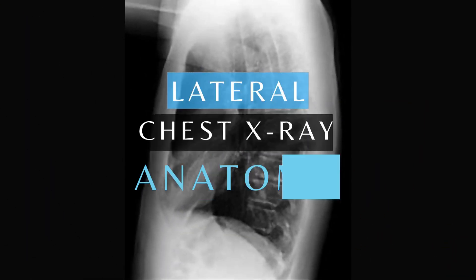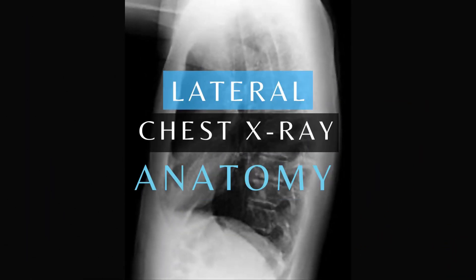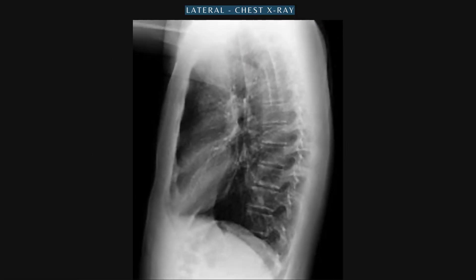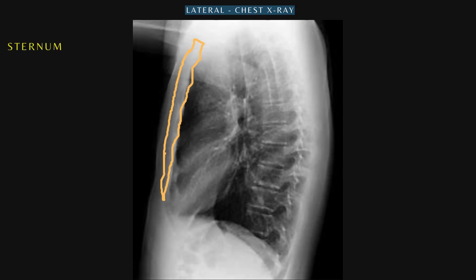Let's look at the anatomy of the lateral chest x-ray. This x-ray helps us to paint a three-dimensional picture of depth for the structures we identified in the PA radiograph. First we have the sternum.